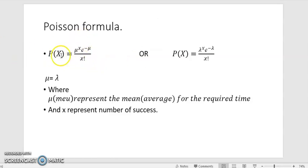The Poisson formula says that probability of X equals mu exponent X, E exponent negative mu divided by X factorial. You can also write the formula by replacing mu with lambda. Where mu represents the mean or average for the required time, and X represents the number of success.